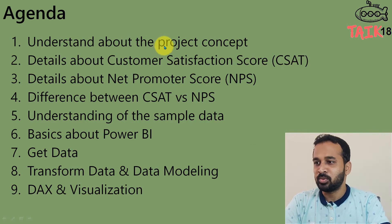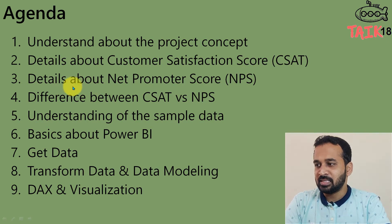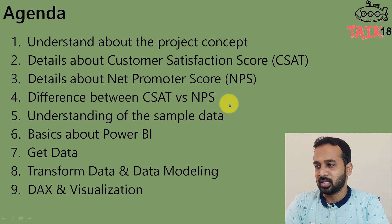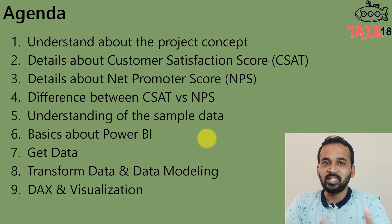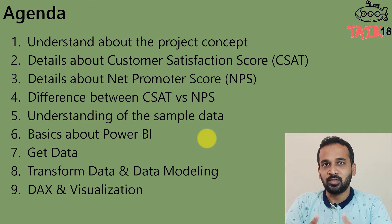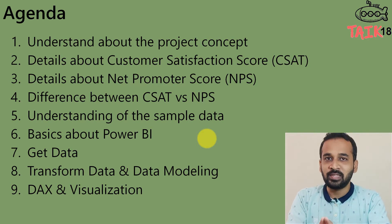The first thing is we'll understand the project and concept — what is customer satisfaction and how it goes. Then we're going to discuss the details about the customer satisfaction score, which is called C-SAT, and then details about net promoter score, NPS. We are going to see the difference between C-SAT and NPS, understand the sample data, and from there how we can build the report. Then we are going to talk about the basics of Power BI, data transformation, data modeling, use of DAX, and visualization.